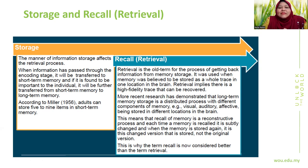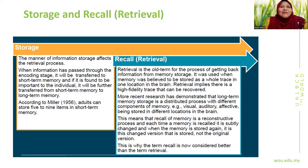If you look at the information processing model of memory, there are generally three main types of memory: sensory, short-term, and long-term. The Atkinson and Shiffrin model covers the same three types. Recall or retrieval is the term for the process of getting back information you want to remember. For example, if you drive every day, your driving knowledge is stored in long-term memory, and you recall it — knowing where to insert your keys.